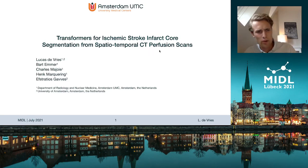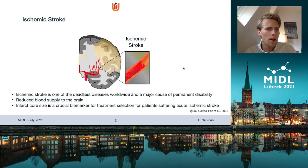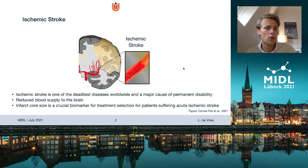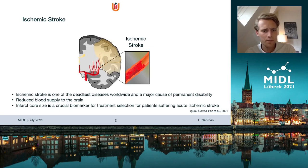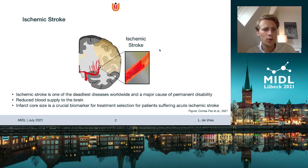We are working on infarct core segmentation for patients suffering acute ischemic stroke. Ischemic stroke is one of the deadliest diseases worldwide and a major cause of permanent disability. It happens when part of an artery in the brain is obstructed by, for example, a blood clot, leading to reduced oxygen flow and cell death. The size of this infarct core is an important biomarker to determine what kind of treatment is needed in the hospital.